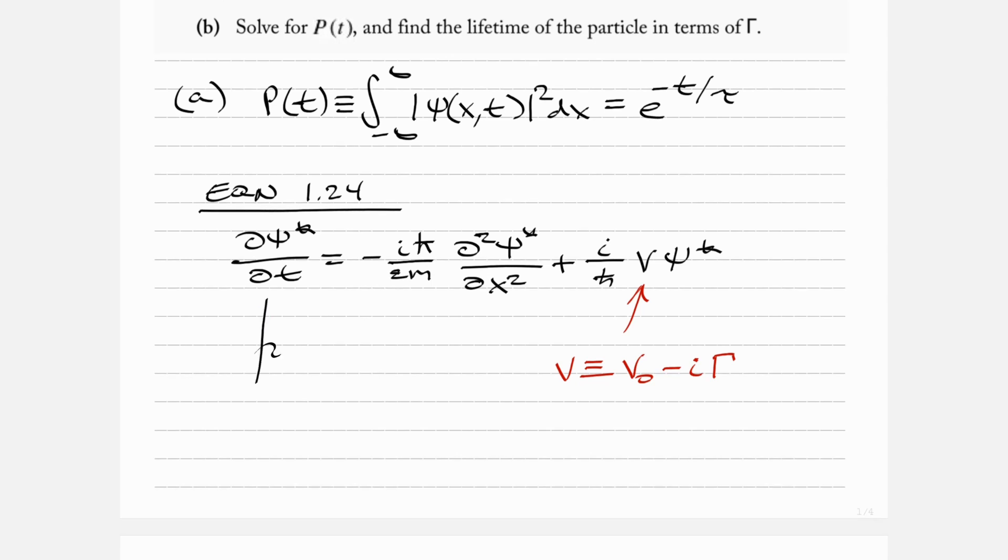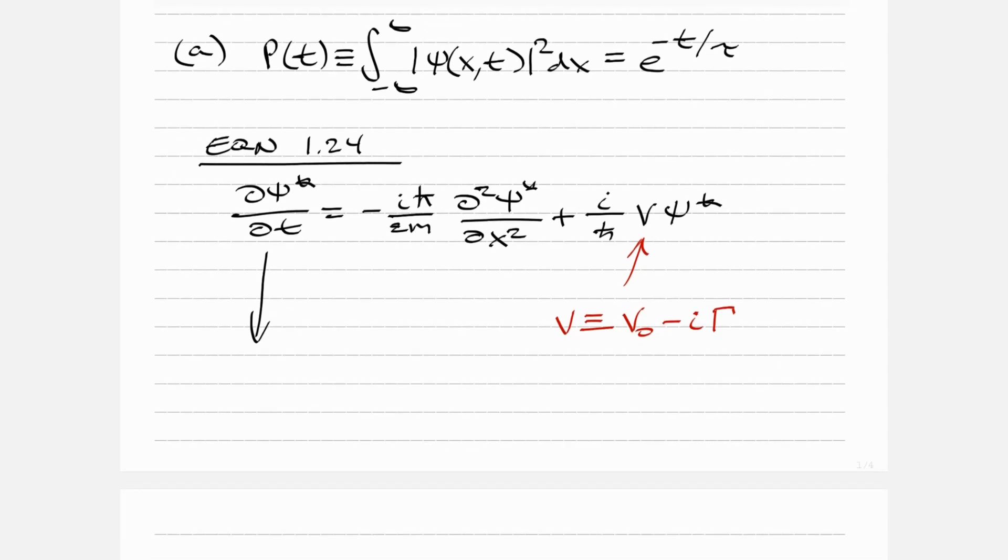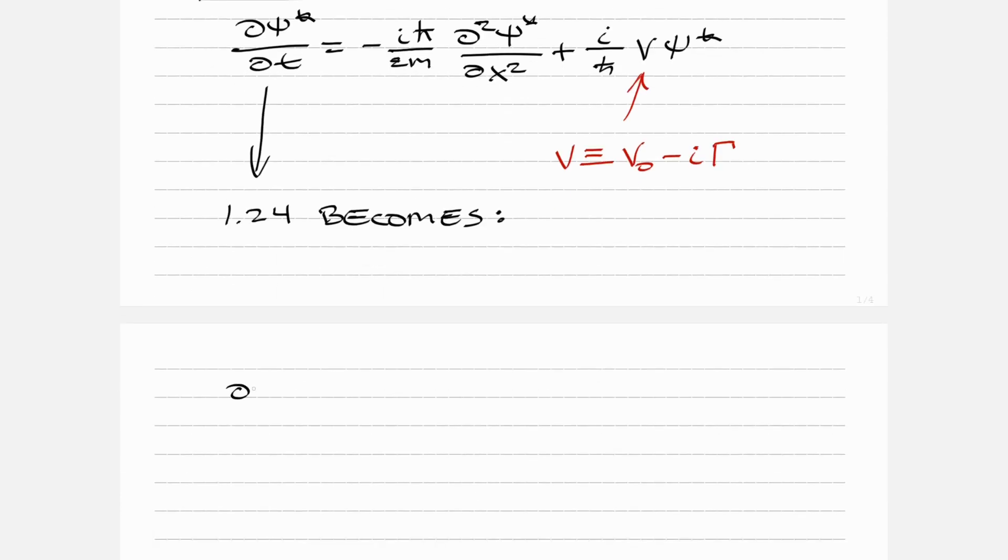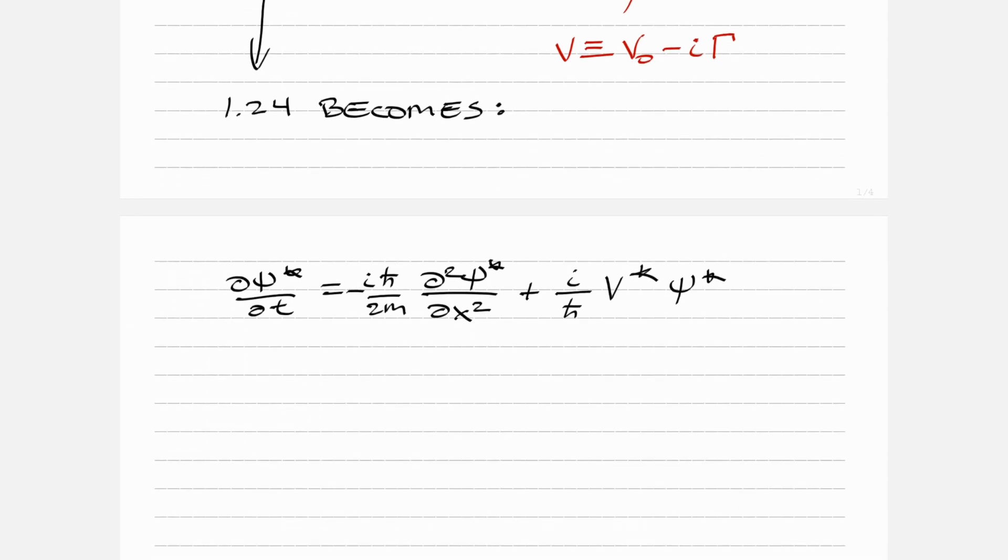So really equation 1.24 becomes something different. It becomes dψ*/dt equals -iℏ bar over 2m d²ψ*/dx² plus i over ℏ bar - everything looks the same so far - but we do V* ψ*. We have to take the complex conjugate of V.